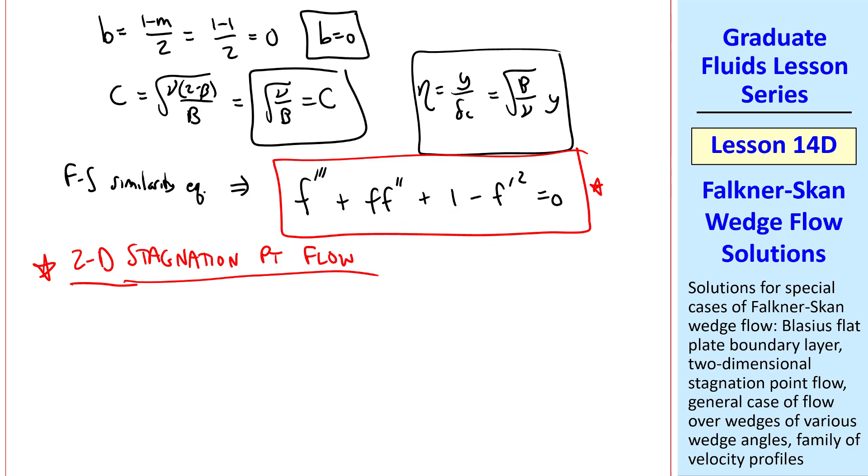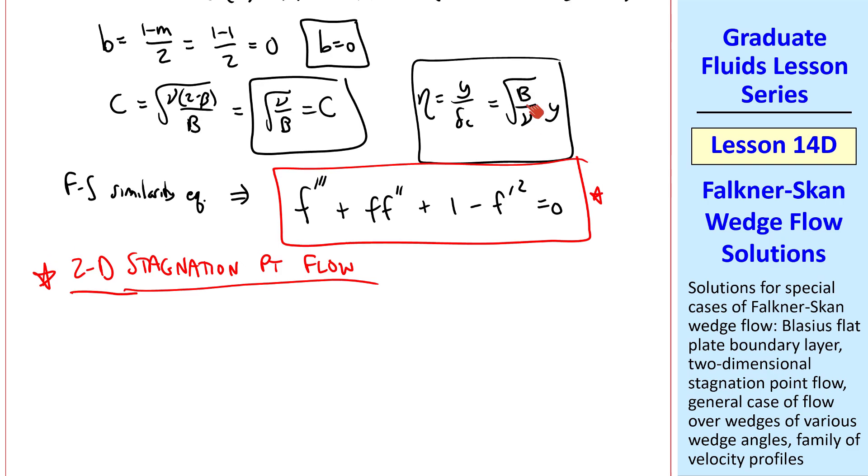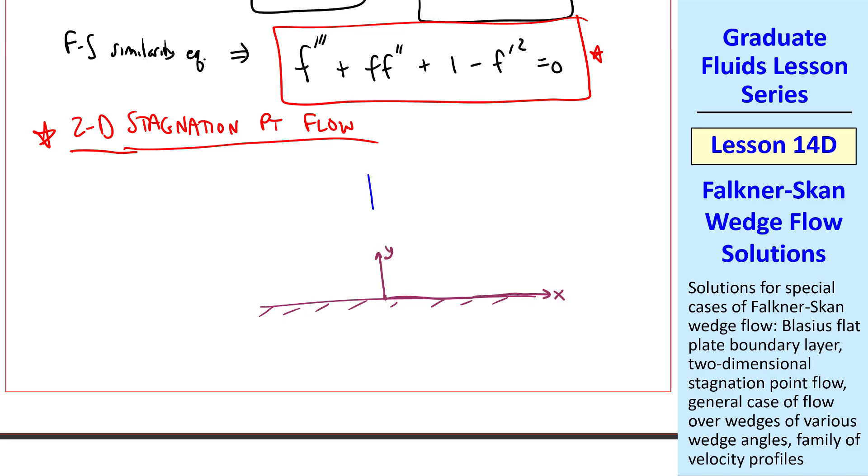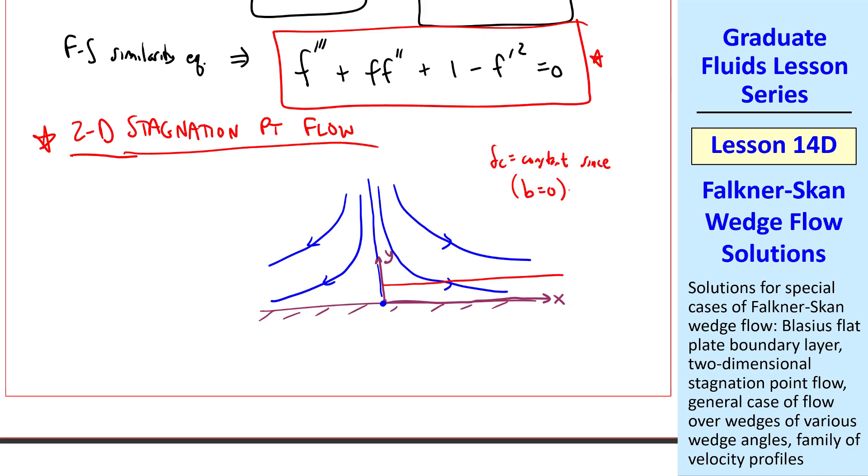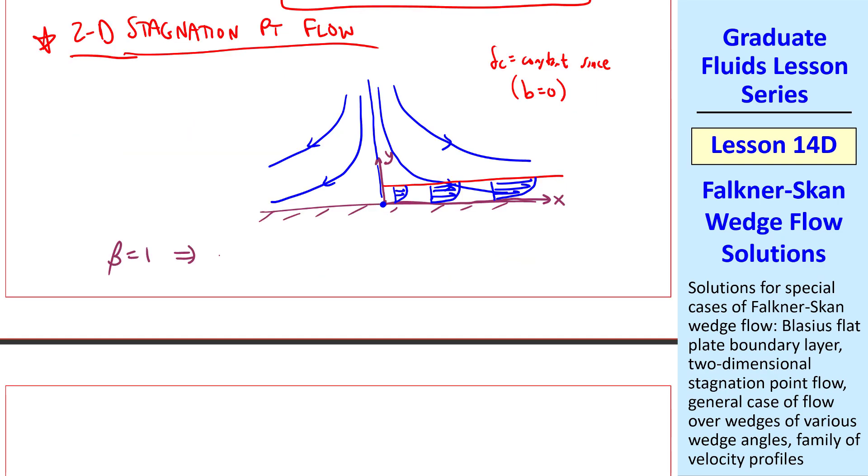Everything here is identical to our previous 2D stagnation point flow problem. The definition of f, the equation, the boundary conditions, even the choice of constant b is the same as previously. As you may recall, we have flow coming down from above into a stagnation point at the origin. And you may recall that the boundary layer was flat, in other words, constant thickness. And that's because b is zero here, the exponent in the delta_c equation. But u is growing with x. So the boundary layer profiles look something like this, as the flow accelerates in the x direction. So beta equal 1 is our second in the family of Falkner-Skan flows. And it represents 2D stagnation point flow.